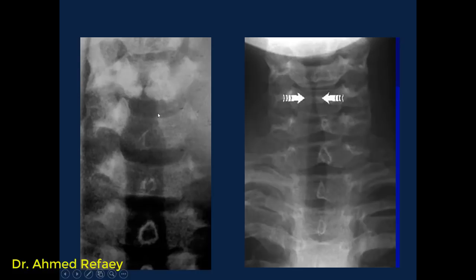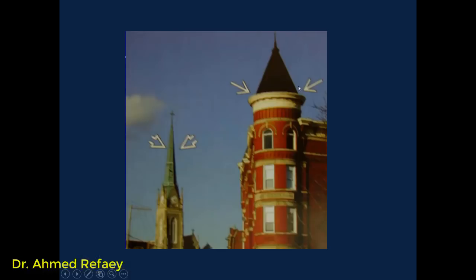This is the normal subglottic area with normal subglottic shouldering. This is a case of croup — here we have loss of the normal shoulders, giving the appearance of an inverted V shape or steeple sign. The steeple sign is illustrated by comparing a building with shoulders versus a steeple building without shoulders.